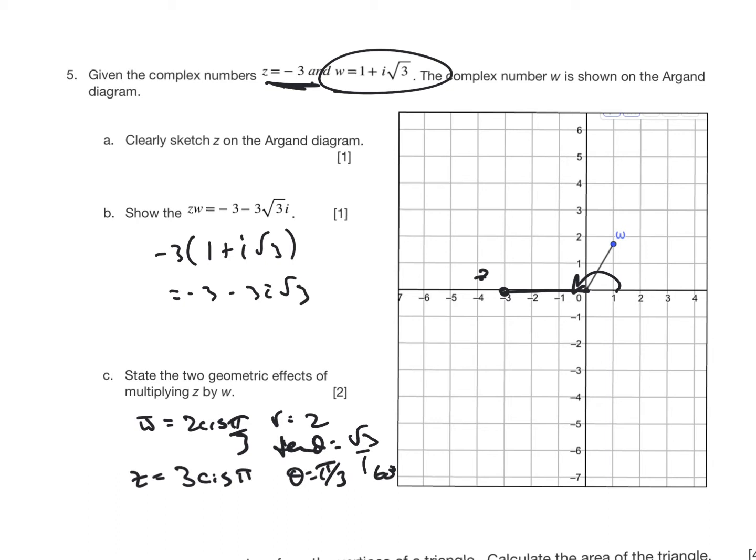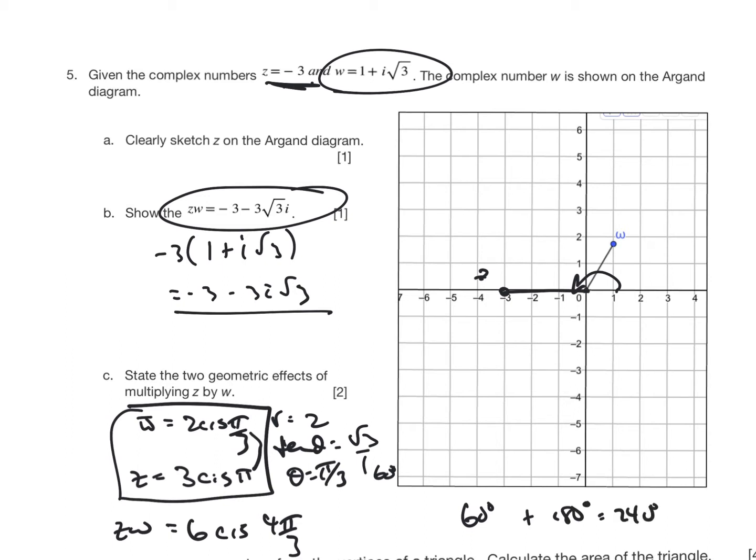And if I then consider what is zw, well, zw is going to be... I can just look at these forms here, and I know that is going to be 6 cis, and I add those two together, and that's going to be 4 pi by 3. And recognize it's 60 degrees and 180, and so it's 240 degrees.